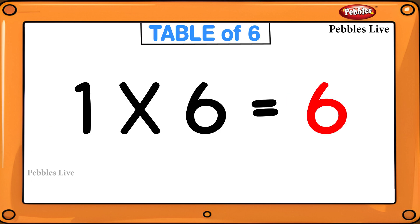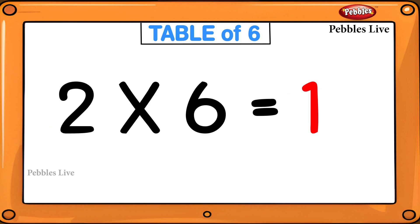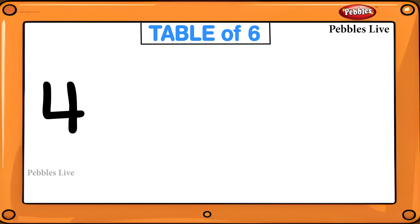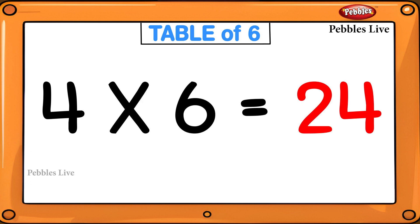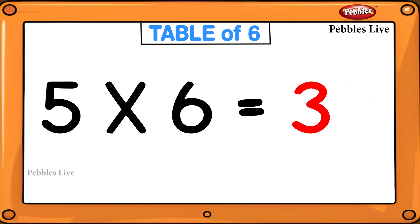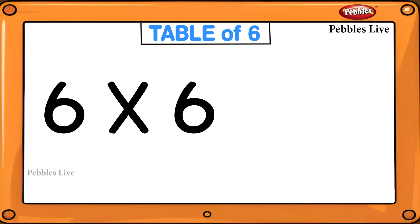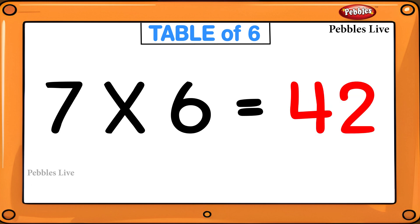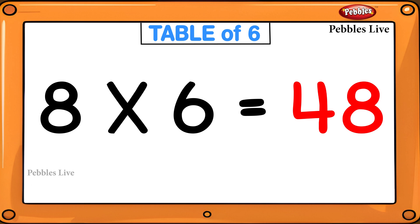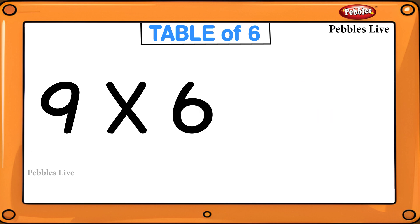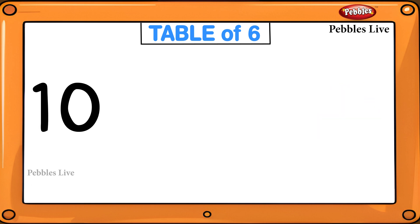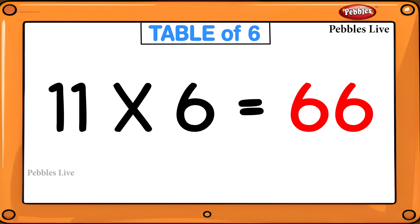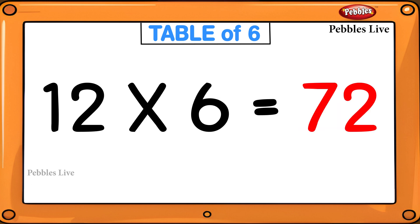1 six is 6, 2 sixes are 12, 3 sixes are 18, 4 sixes are 24, 5 sixes are 30, 6 sixes are 36, 7 sixes are 42, 8 sixes are 48, 9 sixes are 54, 10 sixes are 60, 11 sixes are 66, 12 sixes are 72.